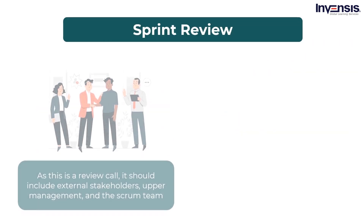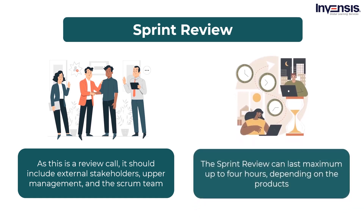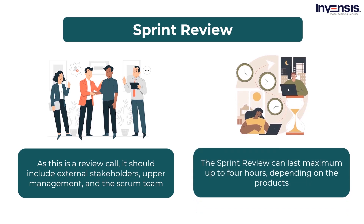The Iteration Review is a chance to highlight the team's efforts, either in a more informal manner such as demo Fridays, or in a more formal meeting structure. This is the opportunity for the team to celebrate their achievements, show off work completed during the iteration, and receive rapid feedback from project stakeholders. Work must be completely verifiable and fulfill the team's quality level to be regarded as complete. As this is a review call, it should include external stakeholders, upper management, the Scrum team — the development team, the Scrum master, and the product owner — as well as developers from another team and customers. The Sprint Review can last a maximum of up to 4 hours, depending on the products.